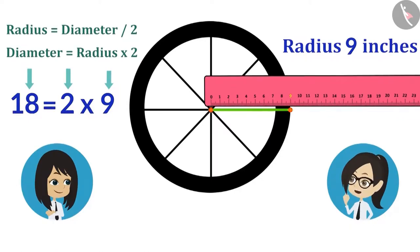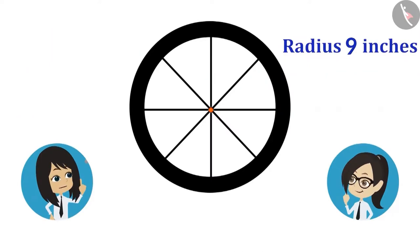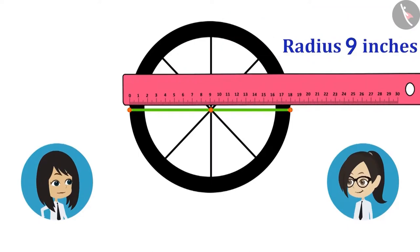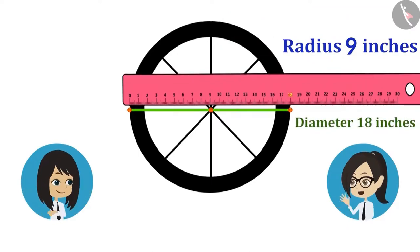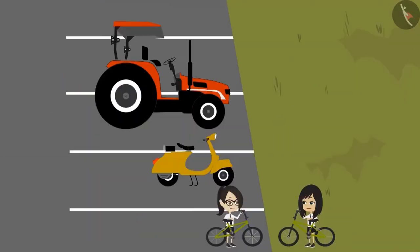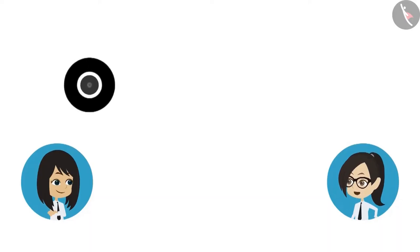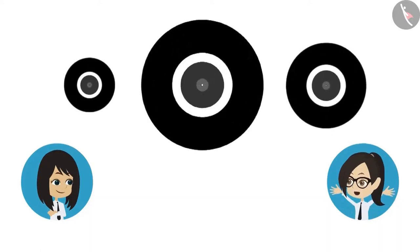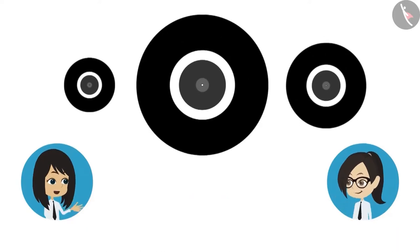Why not measure the diameter of this wheel so that we know that our calculation is correct? Correct. Yes. Let's measure all the wheels. Here is the wheel of the scooter. This is the front wheel of the tractor. And this is the tractor's rear wheel. Now let's find the center for all.